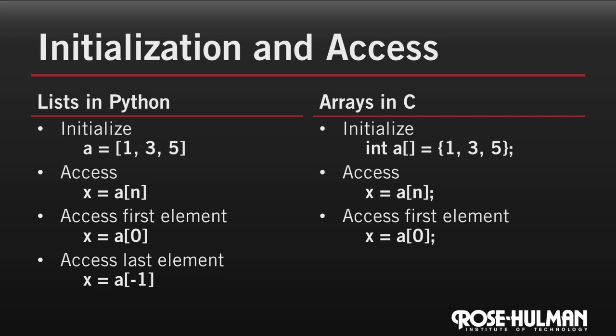Now accessing the last element's a little bit different. Remember, lists in Python remember their own length, and that allows the Python interpreter to work backwards from the end of the list. So in Python, we can say A of negative one to get the last element. Because arrays in C don't store their own size, the compiler has no way to automatically index from the end of the array. So to get the last element of an array in C, we have to work backwards from our separately stored size.